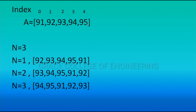Index 4 stores 95. Next, we get n = 3 as input from the user — how many times the list values want to be circulated. If the n value is 1, then the first value, 91, is moved to the last position.